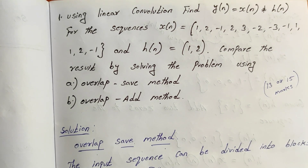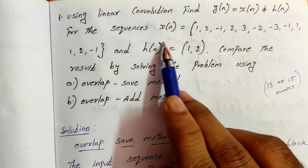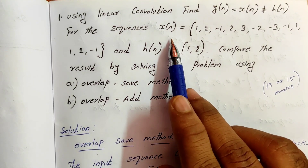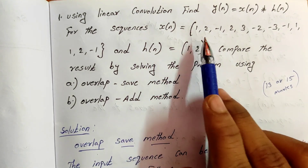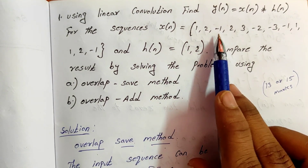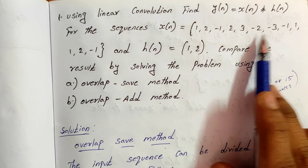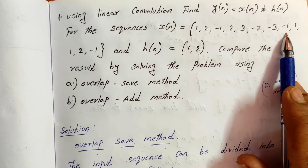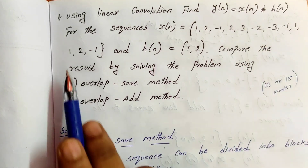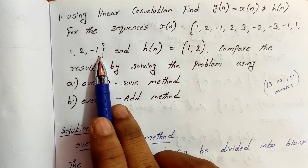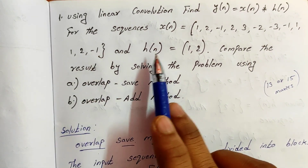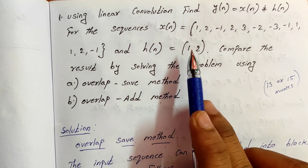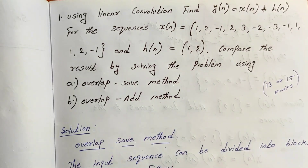We need to talk about x of n. x[n] is equal to {1, 2, -1, 2, 3, -2, -3, -1, 1, 1, 2, -1}. We need to talk about h[n], which is equal to {1, 2}.